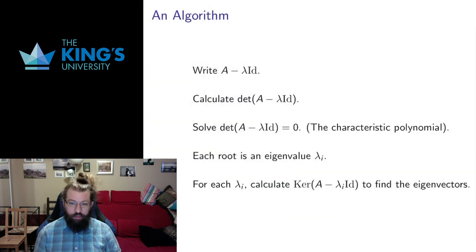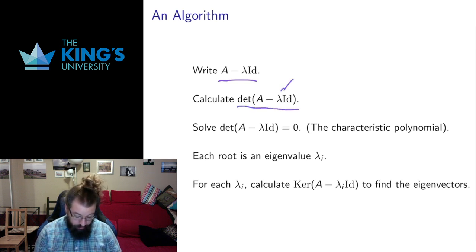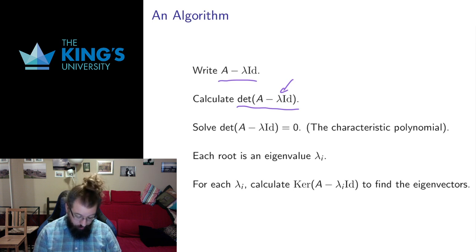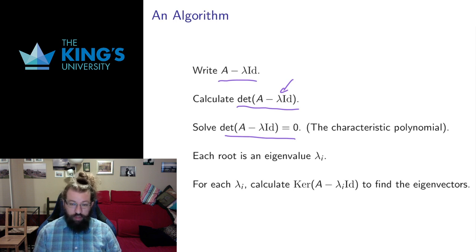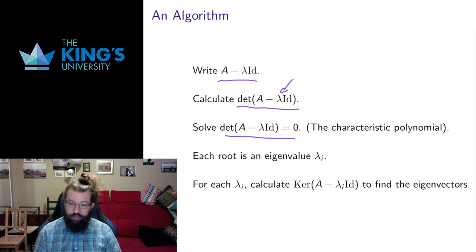This gives us an algorithm: write the matrix A minus lambda identity — that is, take matrix A and subtract lambda from each diagonal entry, where lambda is an unknown variable. Calculate the determinant of that, still leaving lambda as an unknown. That gives us a polynomial in lambda, called the characteristic polynomial of the matrix. We set that polynomial equal to zero. The degree of the characteristic polynomial equals the size n of the matrix — a three-by-three matrix gives a cubic, a four-by-four gives a quartic.